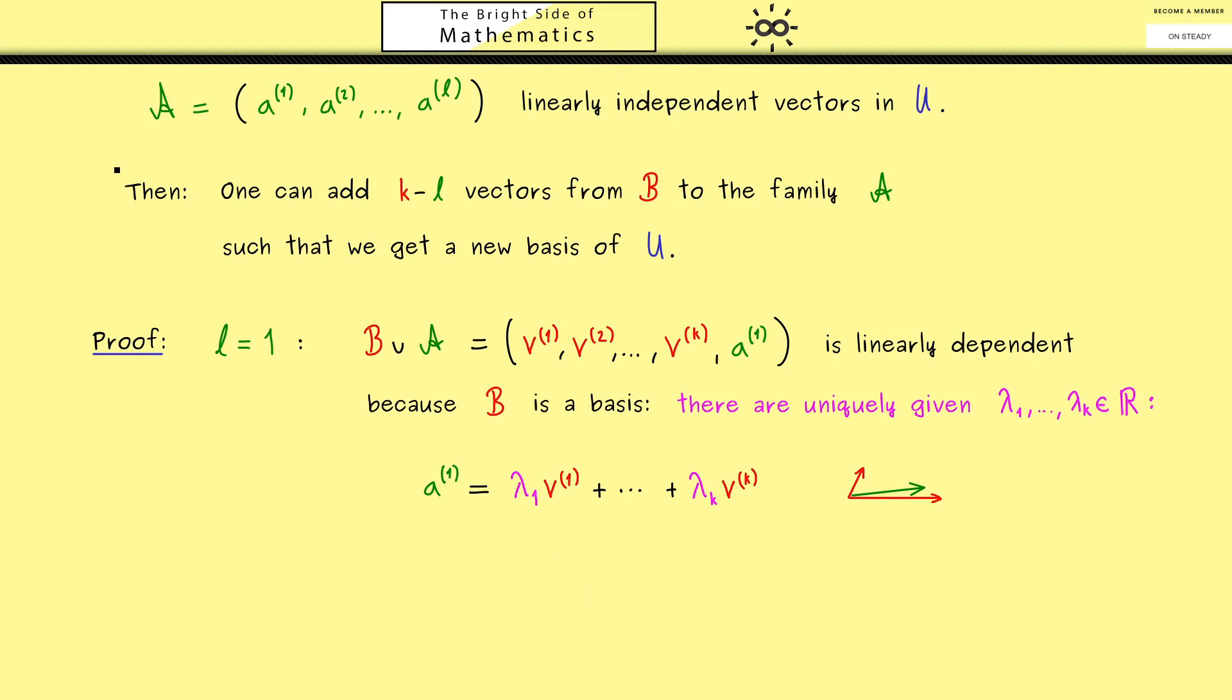Moreover, we know that the family A is linearly independent, which means a^(1) is not equal to the 0 vector. So we can conclude that not all the coefficients are equal to 0. Therefore, let's choose a lambda_j which is not equal to 0. And this now means we can divide by this coefficient on both sides. And therefore, we can bring the vector v^(j) to the left hand side. And then, we also get a linear combination for this vector. If we write it down, it looks a little bit more complicated than before. But essentially, it's the same length as before because we omitted the jth entry here and we subtracted a^(1) here.